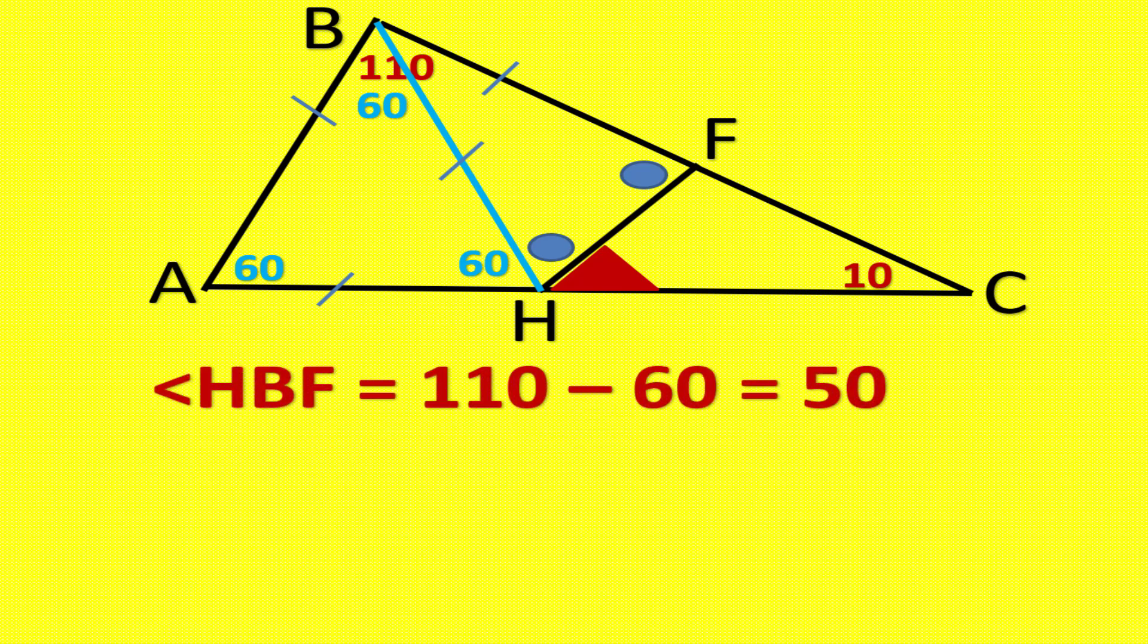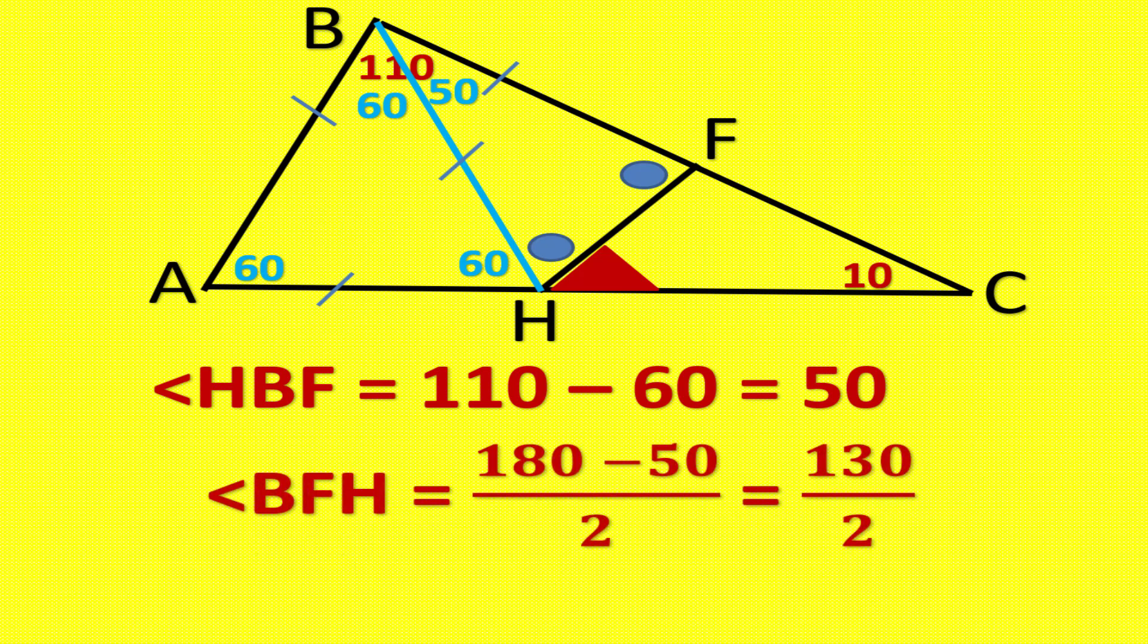Angle ABH equals angle HBF. Angle BFH equals 180 minus 50 divided by 2, equals 130 divided by 2. Angle BFH equals 65.